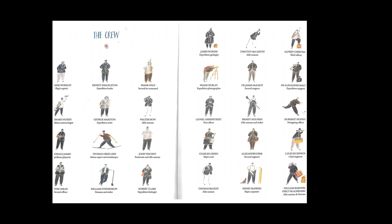Lionel Greenstreet, first officer. Ernest Holness, able seaman and stoker — he's holding a shovel in his hand; what do you think he needs the shovel for? Hubert Hudson, navigating officer. Charles Green, the ship's cook — always important to have a cook. Alexander Kerr, second engineer. Louis Rickinson, chief engineer. Thomas MacLeod, able seaman. Henry McNeish, ship's carpenter. And William Bakewell and Percy Blackborough, who was an able seaman but also a stowaway.